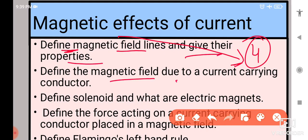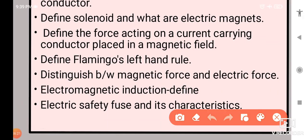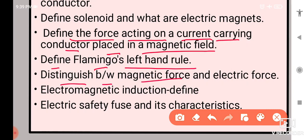Then define magnetic field lines and give their properties. Define the magnetic field due to a current carrying conductor. Define solenoid and what are electric magnets. Then define the force acting on a current carrying conductor placed in a magnetic field. Define Flamingo's left hand rule. Distinguish between magnetic force and electric force. This is also very important that can come in paper. Flamingo's left hand rule can also come for 5 marks, I mean very short type, I mean sorry short type.